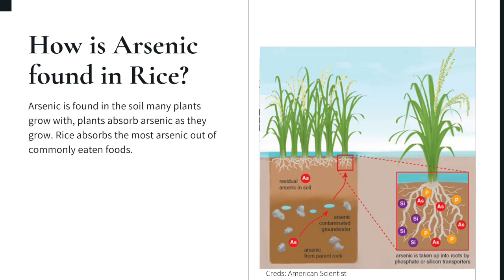So how is arsenic found in rice? Arsenic is absorbed by plants as they grow. Some plants grow more than others, which means that they absorb more arsenic. Rice absorbs the most out of commonly eaten foods. The picture on the right shows how arsenic is brought to the roots by silicon and phosphate transporters.